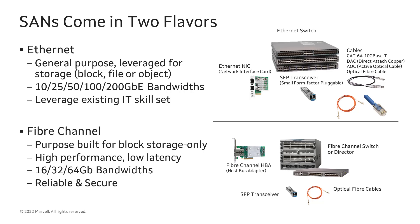Fibre Channel is available today in 16, 32, and 64 gigabit bandwidths and utilizes only fibre cables and transceivers for physical connections. Because Fibre Channel is a different transport and uses specialized HBAs and switches, IT teams do need to be skilled in the Fibre Channel offerings. And because Fibre Channel is a dedicated network, it's air-gapped from the Ethernet network and less prone to hacking or cyber threats.